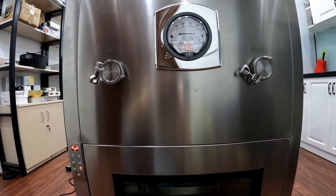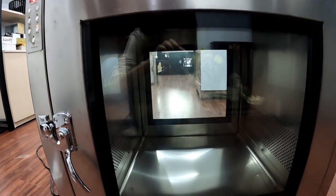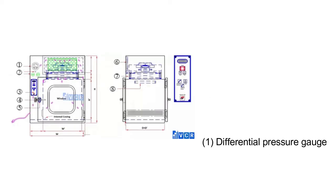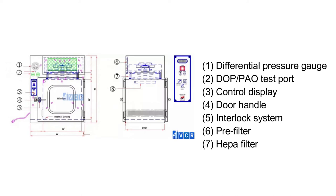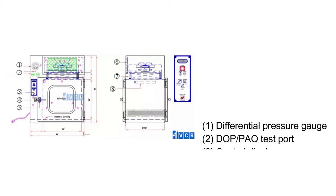The dynamic pass box is equipped with a suction HEPA filter rated at around 0.3 microns, and a differential pressure gauge ranging from 0 to 500 Pa. It is also equipped with a motor blower for blowing out dust particles. The main components of a dynamic pass box include: differential pressure gauge, DOP test port, control display, door handle, interlock system, pre-filter, HEPA filter, and UV light.